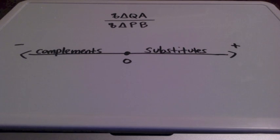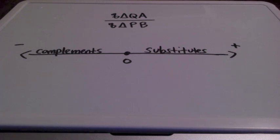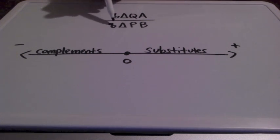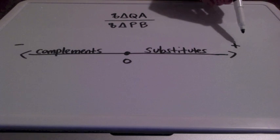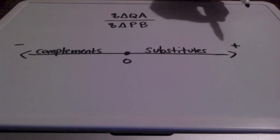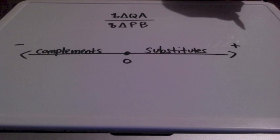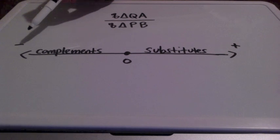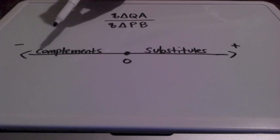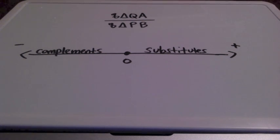When we take a look at cross price elasticity, it shows how sensitive the quantity of one product is to a change in the price of a different product. We take the percentage change in quantity of good A divided by the percentage change in price of good B. A positive cross price elasticity coefficient means the two products are substitutes — when price goes up for good B, people will buy more of good A. A negative coefficient means the two products are complements — when price goes up for good B, people will buy less of good A.